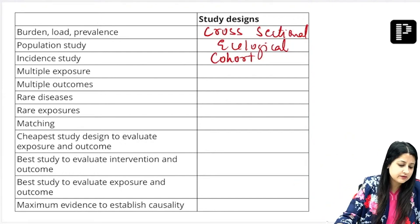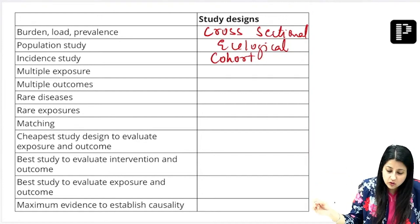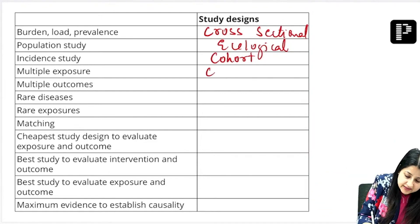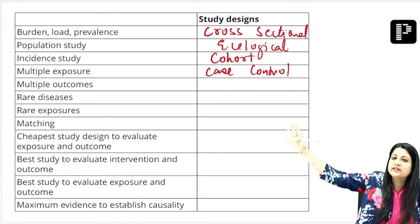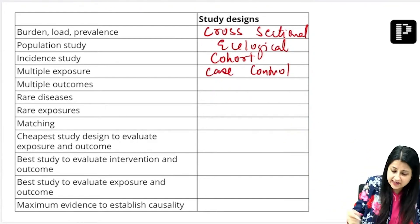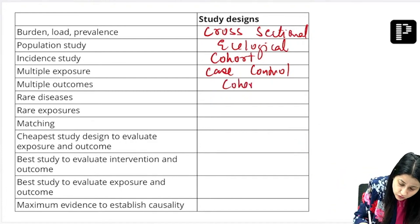So multiple exposures means which study? Case control. But multiple outcomes: divide into alcoholics, non-alcoholics, follow them up for CVD, for cancers, for any other disease. This is cohort.